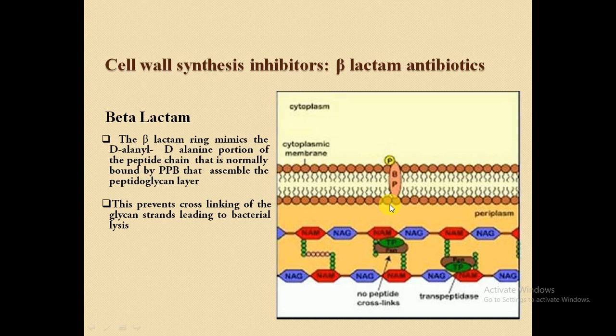So why is it called a beta-lactam antibiotic? If we study the structural activity relationships of beta-lactam, it contains a beta-lactam ring. For example, penicillin is a beta-lactam antibiotic which is also called a cell wall synthesis inhibitor. If we draw its structure, there must be a beta-lactam ring present — that is why it is called a beta-lactam antibiotic.